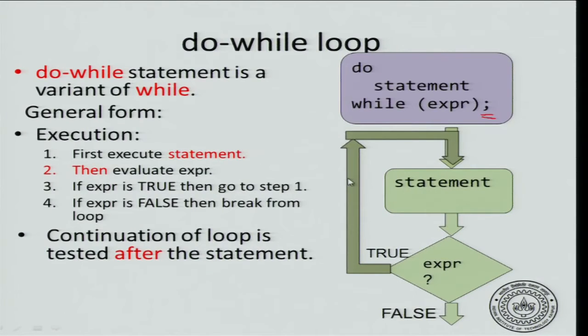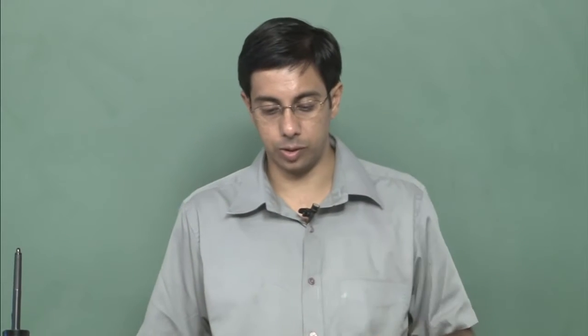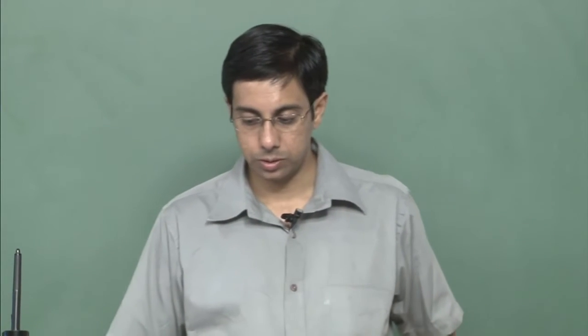The difference between a while loop and a do-while loop is the following. There is a statement that will be executed without testing the expression even once. When you start executing the loop, you will first execute the statement without testing the expression. After executing, you test the loop expression — if it is true, you start executing the loop again. So the first execution of the statement has no test done for it.